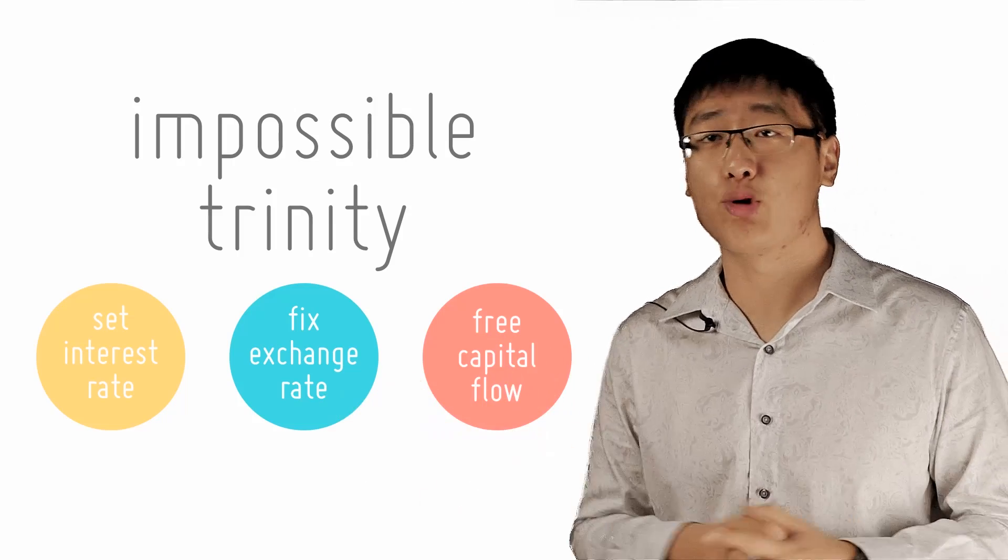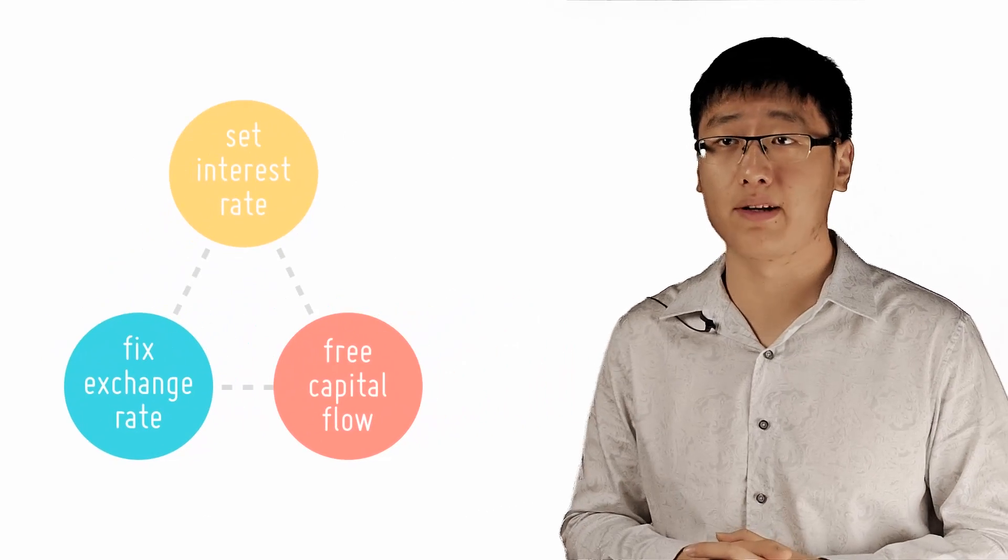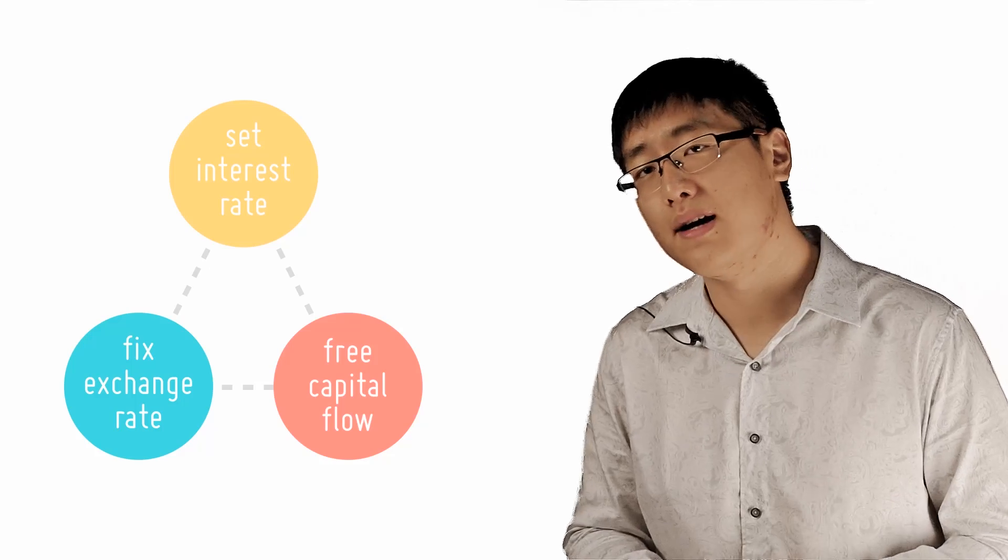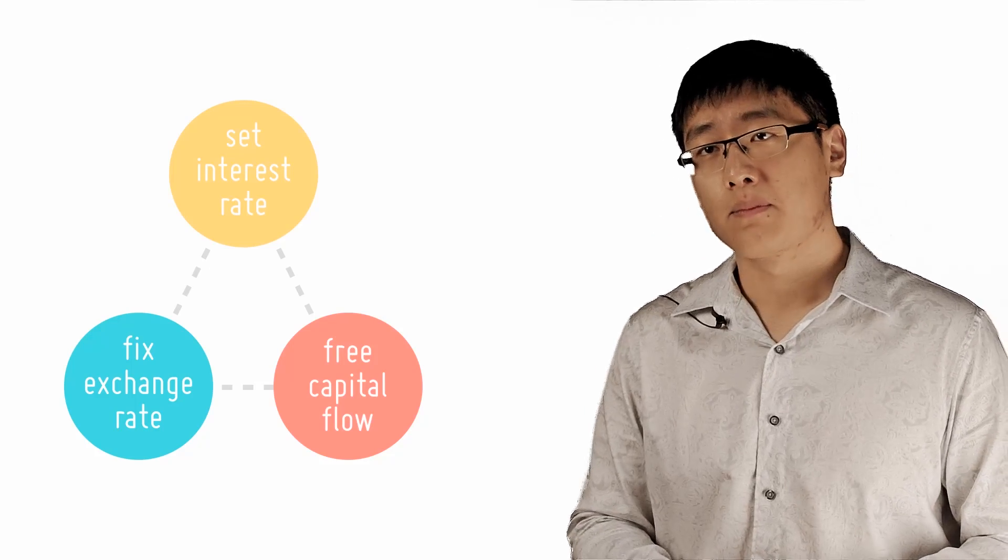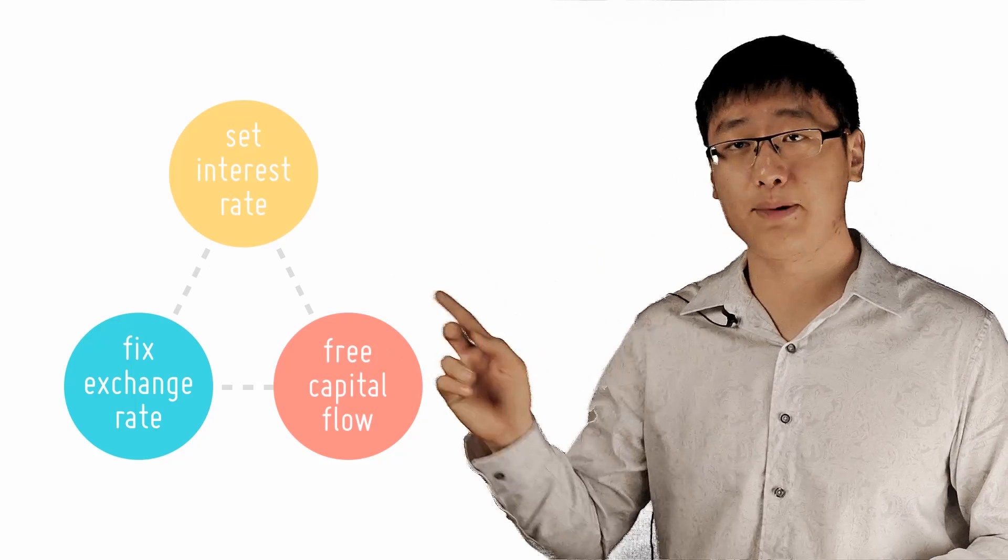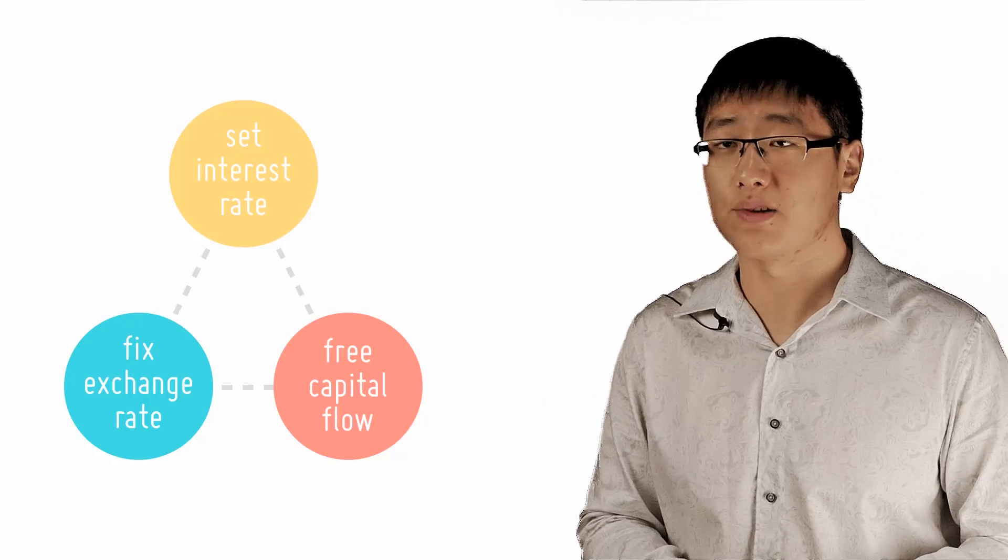Simply put, the impossible trinity are three choices that a government cannot choose all at once. It can only pick two out of these three: fixed exchange rates, free capital movements, and the ability to set its own interest rate.